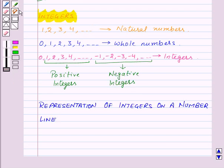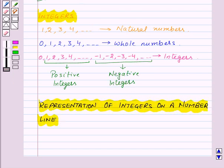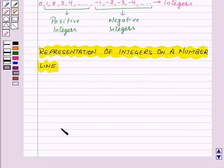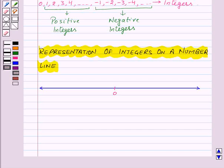Now our next topic is representation of integers on a number line. First of all, let us draw a line. Now mark a point 0 on it. Also mark some points at equal distances on both sides of 0 like this.